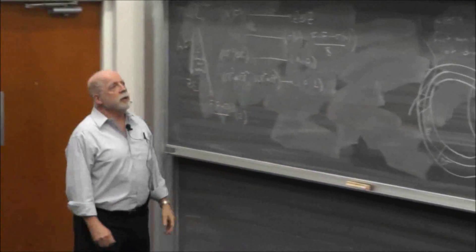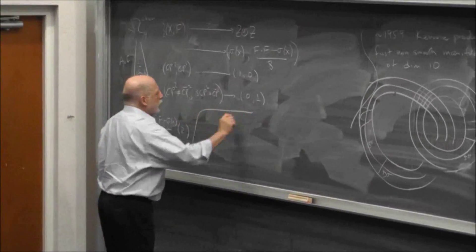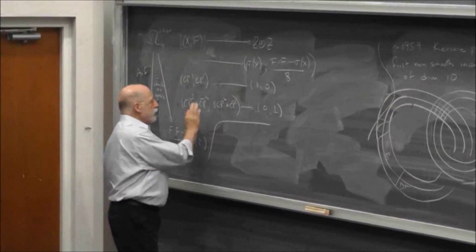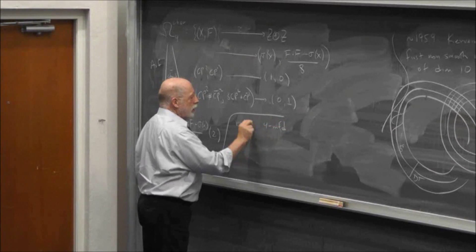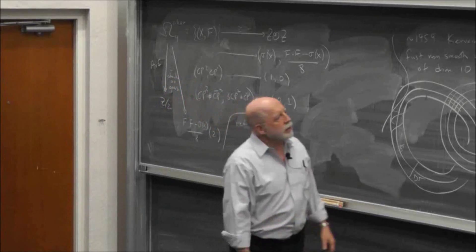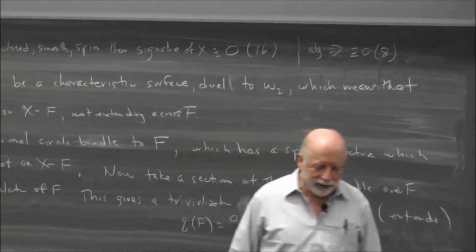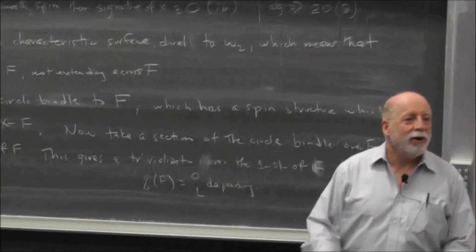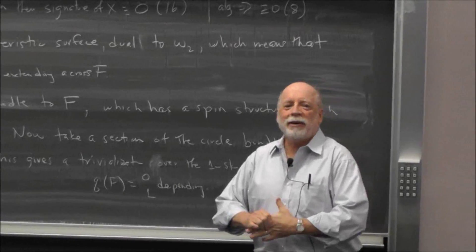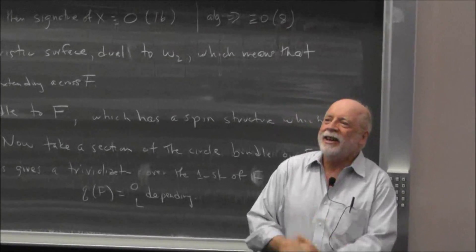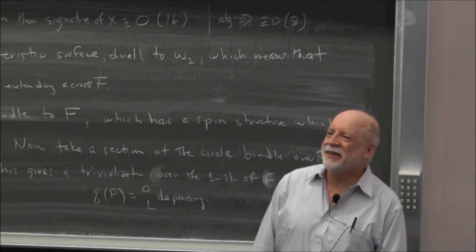This is a generalization of Rohlin's theorem that had already been observed by others. References: these things can be found in my Springer lecture notes book on 4-manifolds. A lot of this material you can also find on Wikipedia — much of what I wrote up here is already there. Thank you.